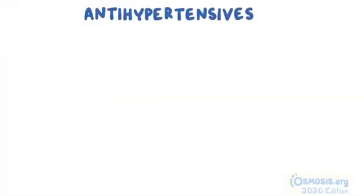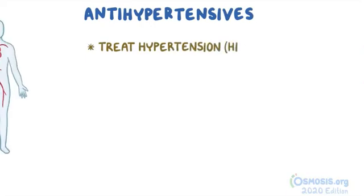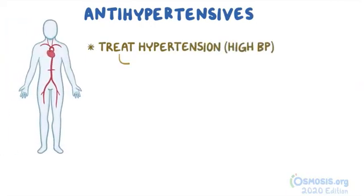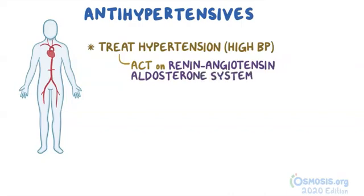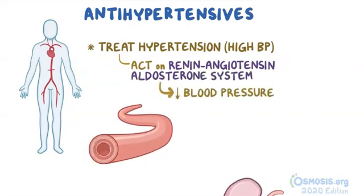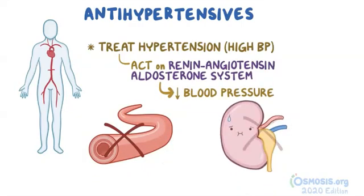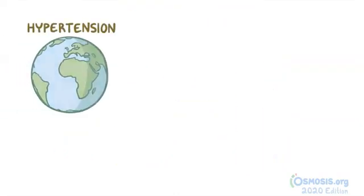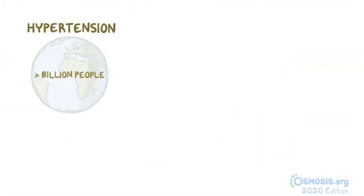Antihypertensives are a class of medication used to treat hypertension or high blood pressure. Certain antihypertensives act upon the renin-angiotensin-aldosterone system to decrease blood pressure by inhibiting vasoconstriction and water reabsorption in the kidneys. Hypertension affects over a billion people around the world and it's a major risk factor for heart disease and stroke.